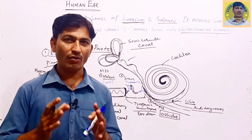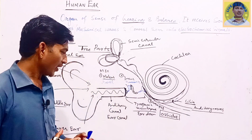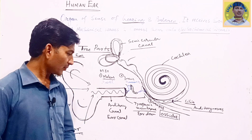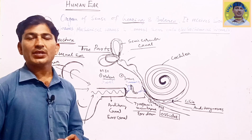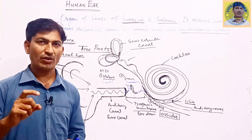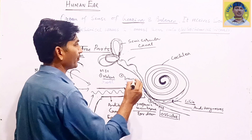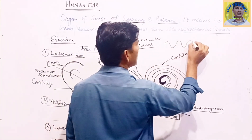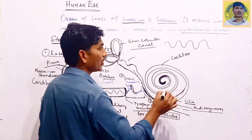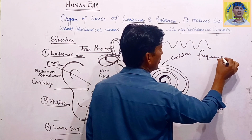So this is the function of the human ear — this is how we hear, this is how our body performs the function of hearing, and we receive the sounds around us. Now another question: how much frequency of sound can a human hear? Sound travels in waves, and the number of waves per second is called the frequency of sound.